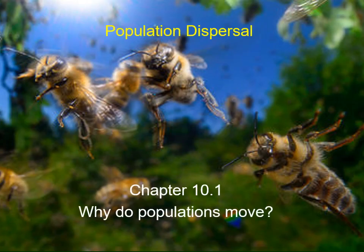We're going to be talking about population dispersal now as part of chapter 10 on population dynamics. We've been following the textbook Ecology Concepts and Applications by Manuel Moles and Anna Scheer, published by McGraw-Hill in 2019, 8th edition. We're going to be concentrating on why populations move, focusing on four different reasons. This is section 10.1.